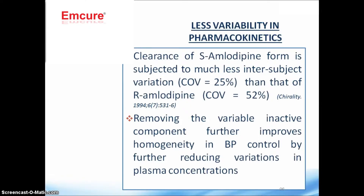Regarding less variability: clearance of the S-amlodipine form is subject to less inter-subject variation than that of R-amlodipine. Removing the variable inactive component further improves homogeneity in blood pressure control by reducing variation in plasma concentrations. So we now have a better, single-isomer drug with less variability in pharmacokinetics.